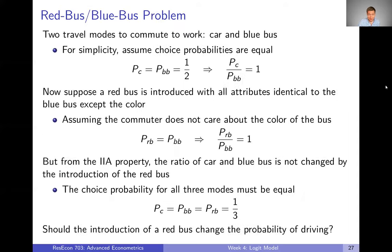There is a downside, and it's best exemplified by the classic red bus/blue bus problem. Discrete choice was basically built on commuting examples, and it's something everyone is familiar with. In this classic example, we're thinking about two travel modes to commute to work: a car and a blue bus — literally a bus that is the color blue. For simplicity, let's assume those choice probabilities are equal — everyone is 50/50 on whether to take the car or the blue bus, so the ratio of car to blue bus equals one.